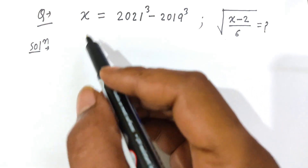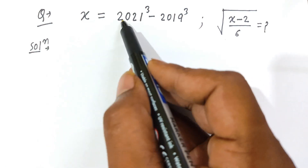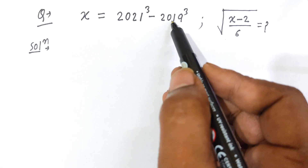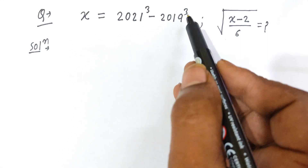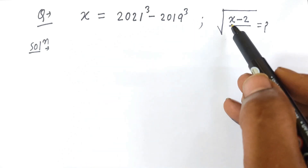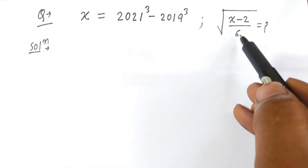Hello students. Today's question is: x is equal to 2021 cubed minus 2019 cubed, and we will find out the value of square root of (x minus 2) divided by 6.